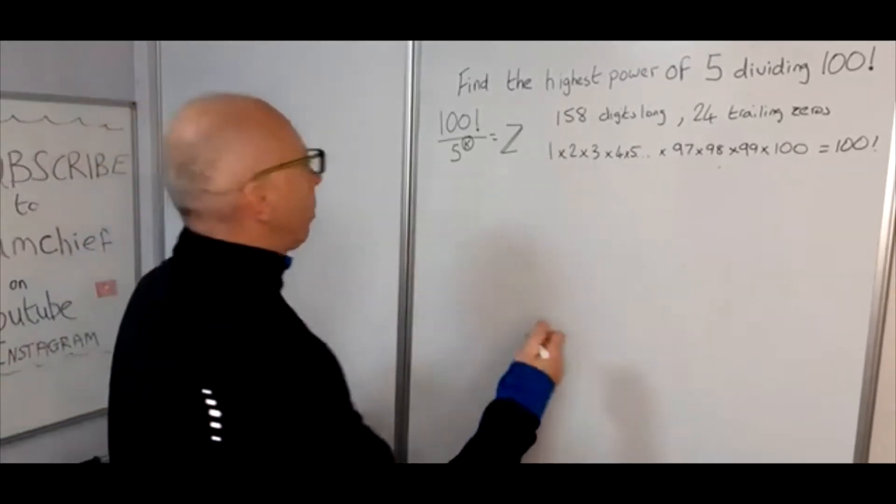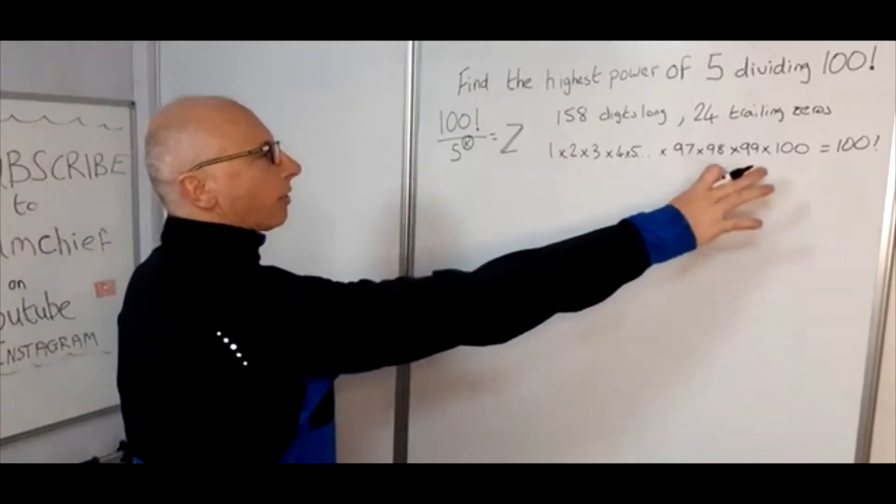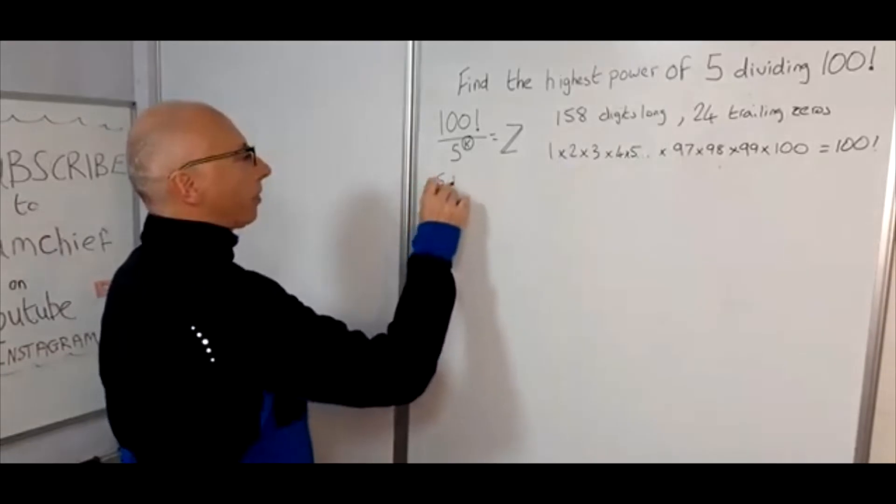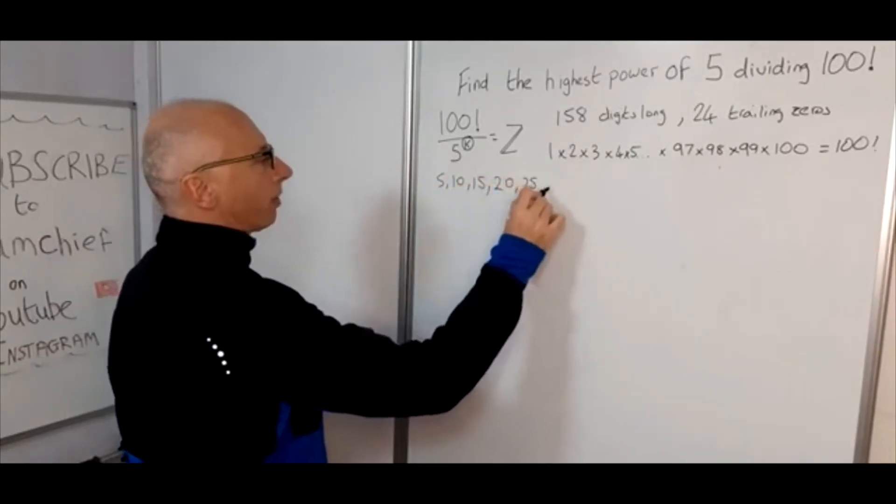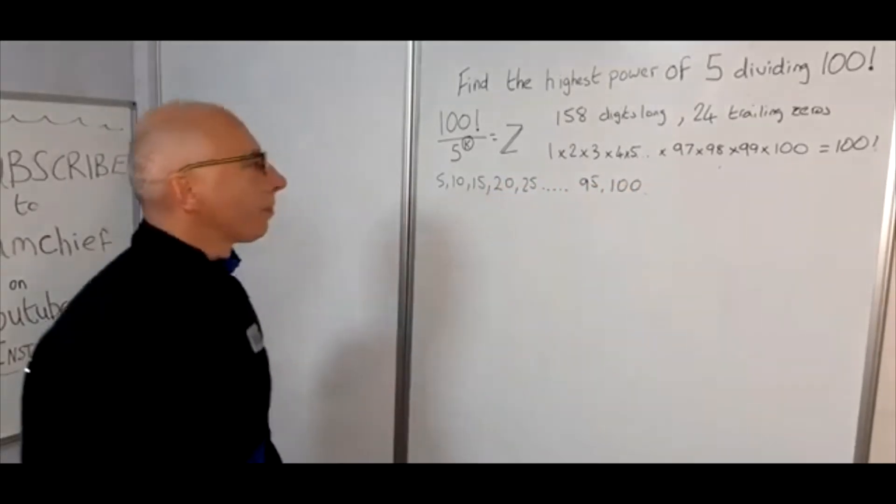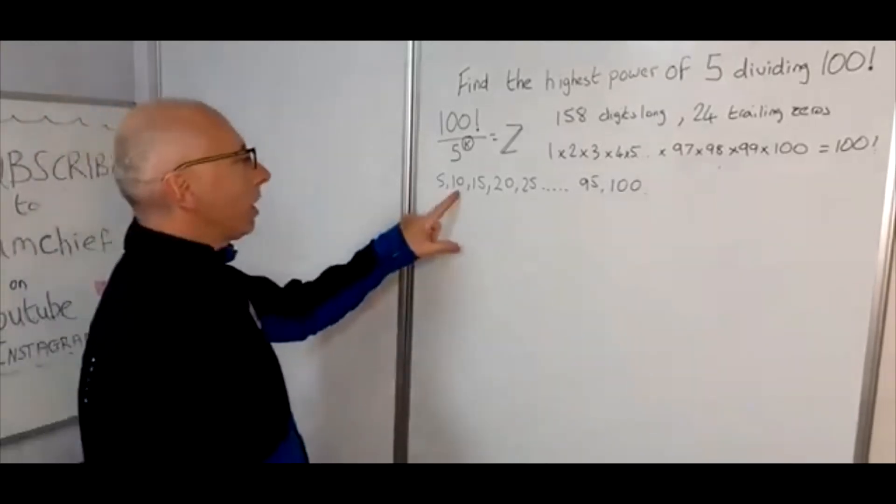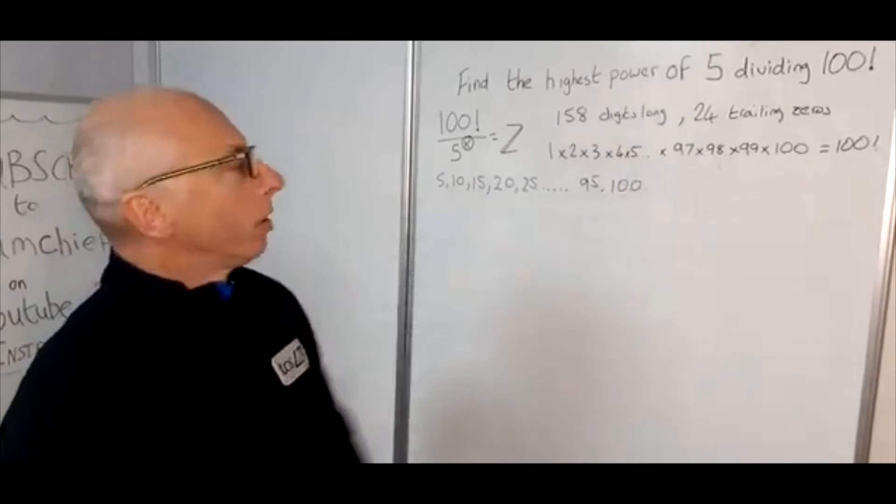So what we can say is we find all the multiples of 5 that give us into the 100. So we've got 5, 10, 15, 20, 25 and so on, all the way up to 95 and 100. So what we're interested in here is all of these digits here within this product here.